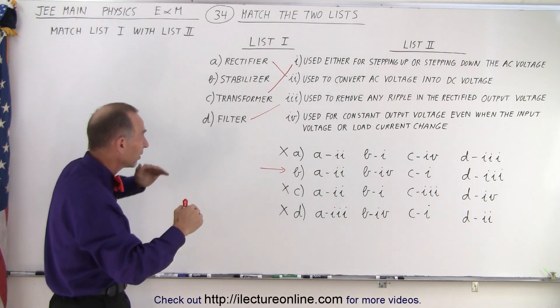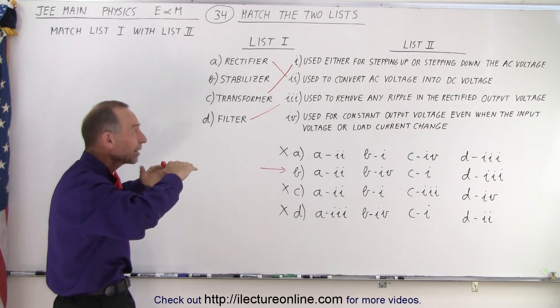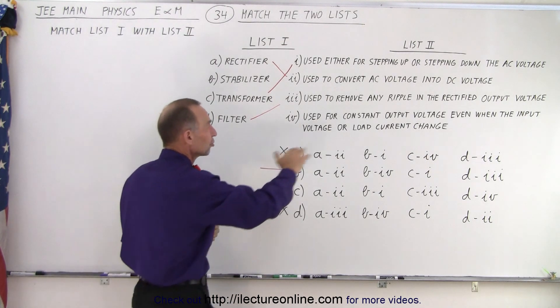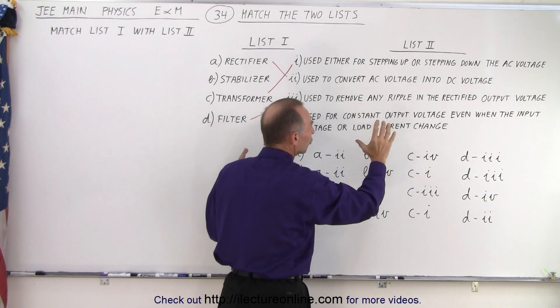If you weren't familiar with it, stabilizing means making things without any change, right? So if there's change, you eliminate the change. So it makes the output voltage stable.